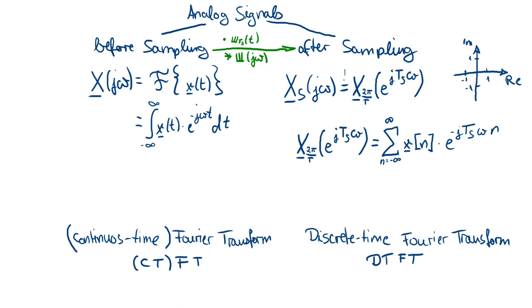Let's take a step back to before sampling. We use the Fourier transform to describe the frequency domain of the signal. Until now we just called it the Fourier transform, but to eliminate ambiguity we now call it the Continuous-Time Fourier Transform, because the Fourier transform we learned in chapter two operates on time-continuous signals. So we now name it the CTFT, and we use it to describe our original analog signal.